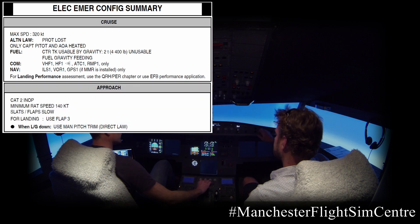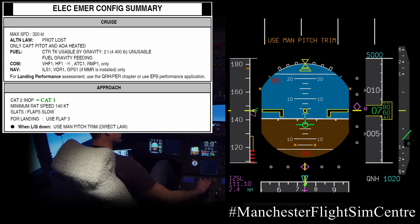Now the approach considerations. We are capped to flap 1 only. We have a minimum RAT speed of 140 knots — below that the RAT will stall. We need to consider configuration timing on the approach, as the slats and flaps are slow. For landing we will use flap 3. And very importantly, when the landing gear goes down, the flight controls will revert to direct law and we need to use manual pitch trim.